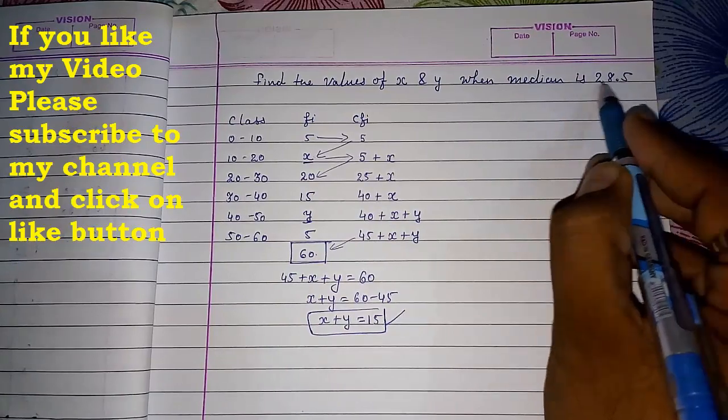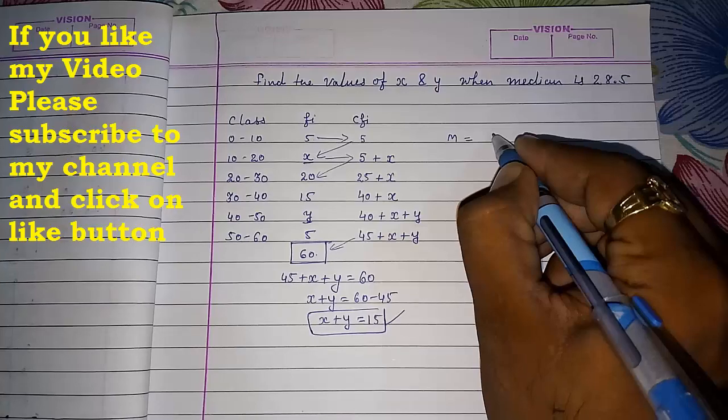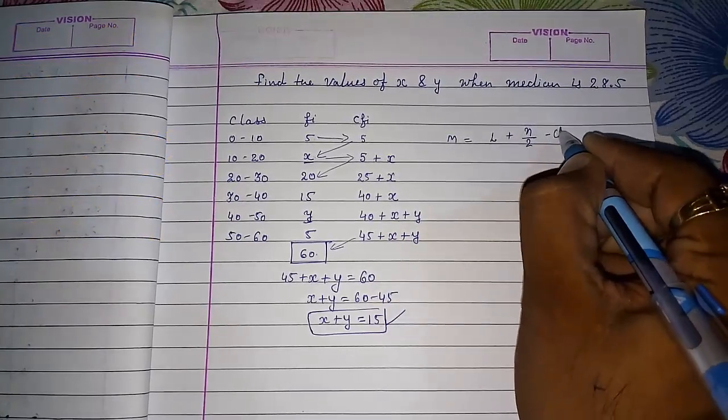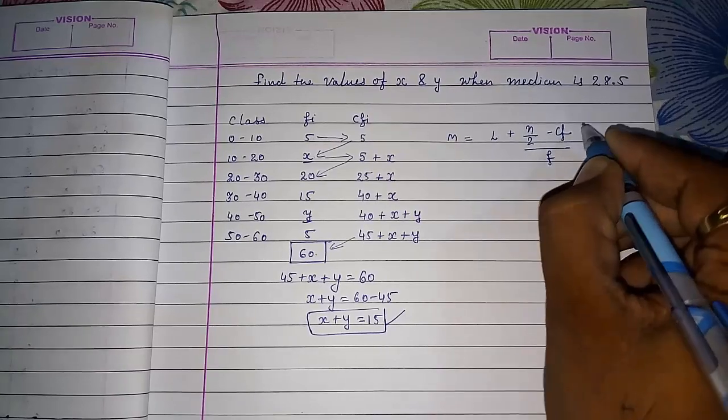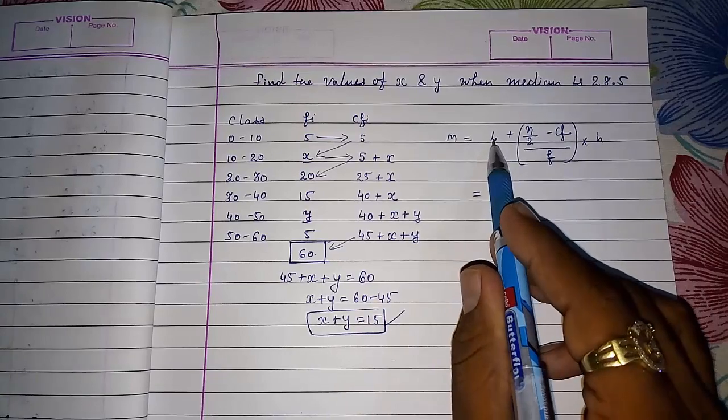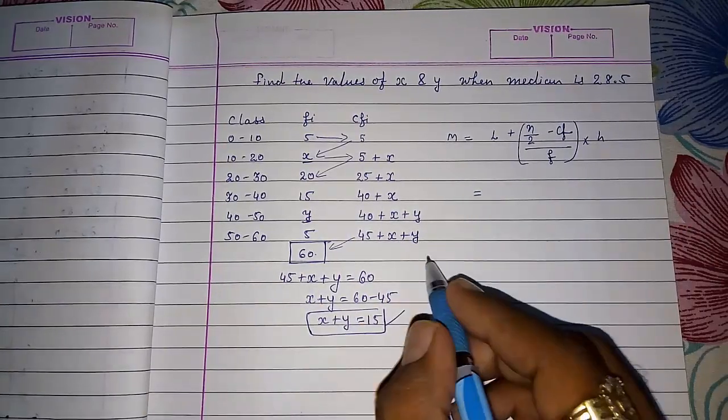Now they had given us median. So we are going to use the formula for median. You know median equals to L plus N by 2 minus CF upon F into H. So now we want L. L how we were finding? We were finding L with the help of N by 2.